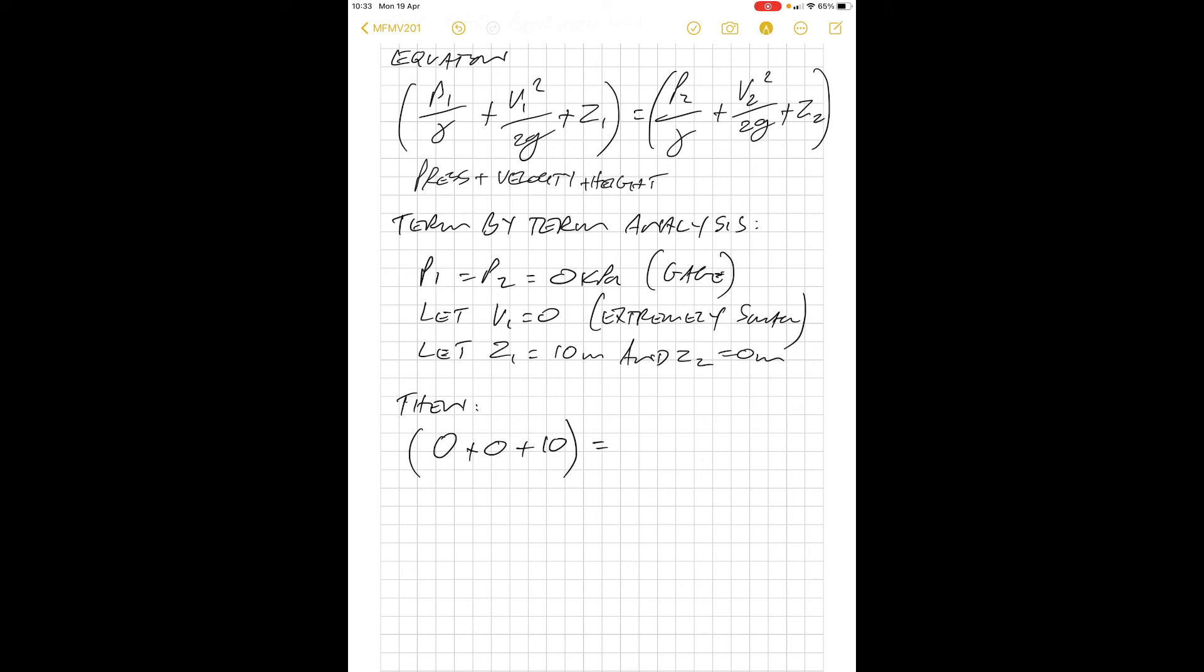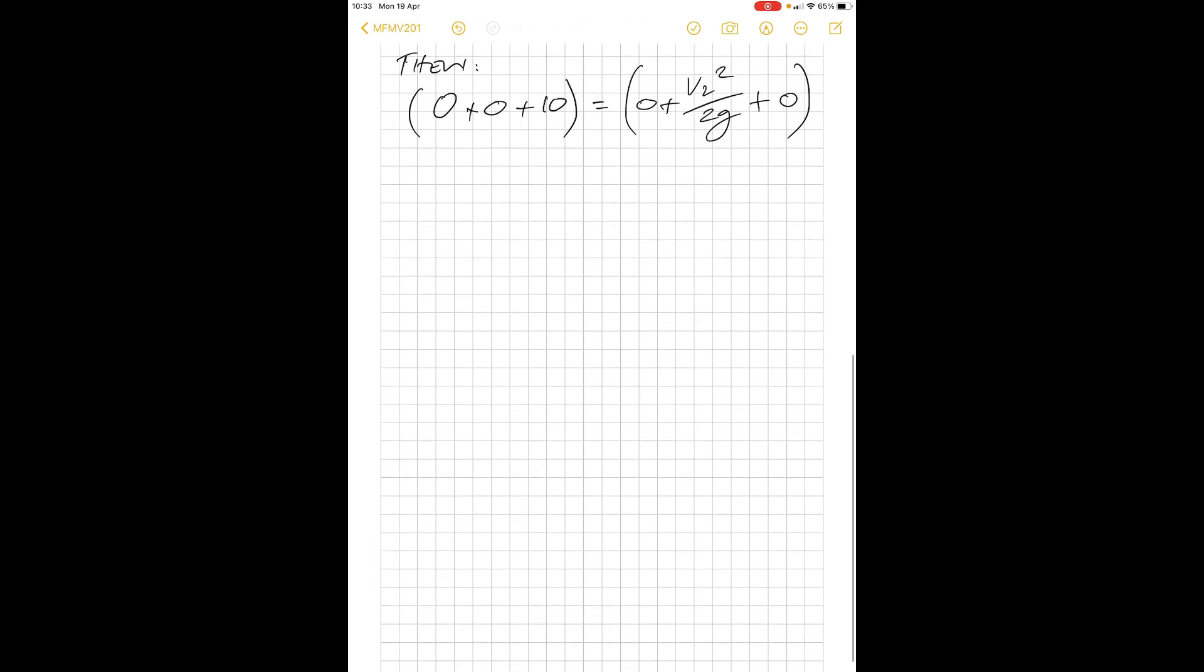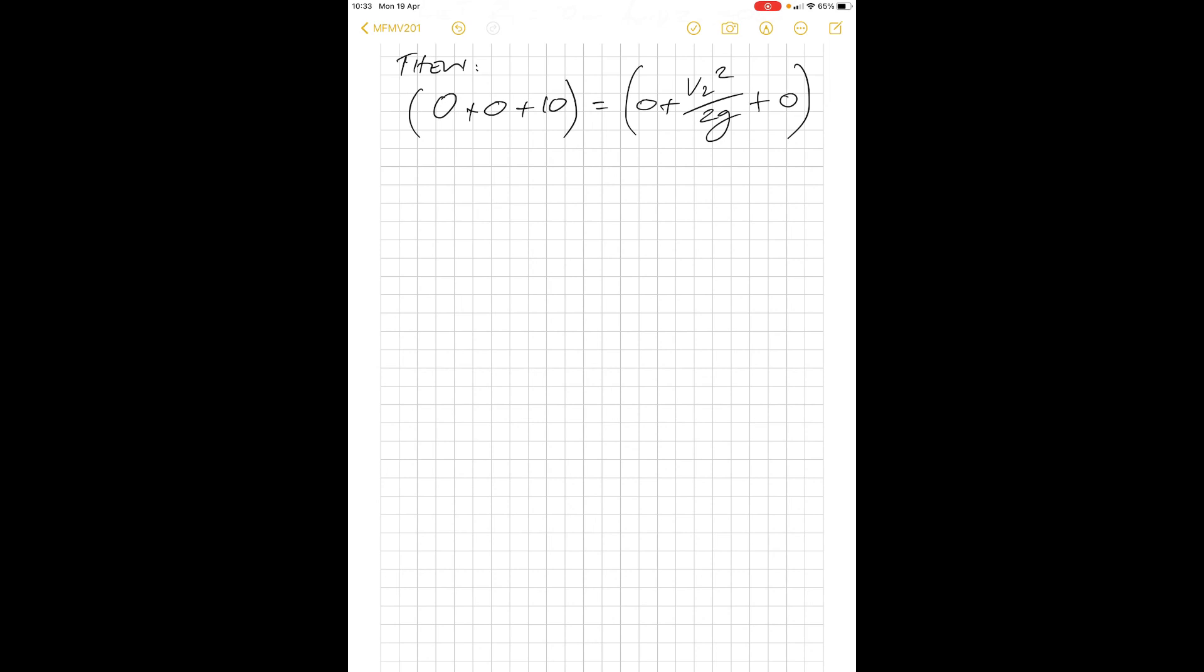That must equal p2, which we also said is zero because atmospheric. We then have v2 squared over 2g. The third term is z2, and we said z2 equals zero because that's the reference point. Now we end up with a Bernoulli equation simplified.